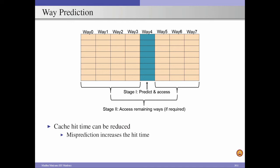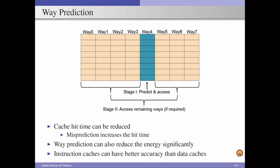When using way prediction, we need high-accuracy prediction mechanisms. Misprediction significantly increases overall hit time. When way prediction gives accurate results, we do not access remaining ways in the data array, reducing energy consumption. Way prediction typically provides high accuracy for instruction caches, as instruction requests exploit more spatial locality. For data caches, requests may not exhibit high spatial locality, so way prediction may not be effective.